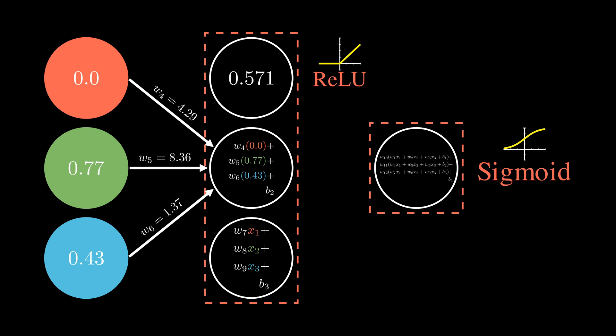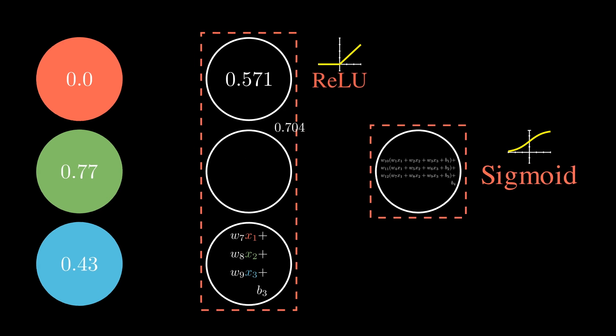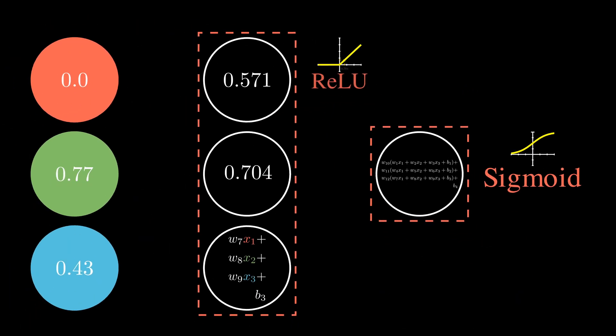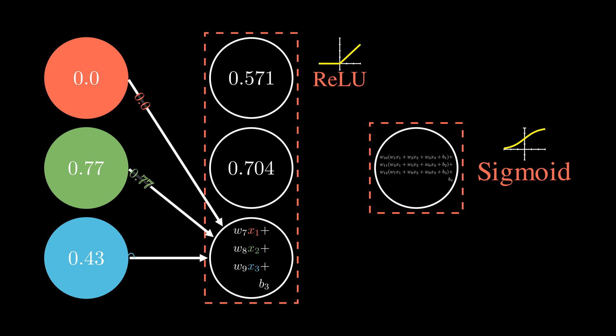We will also add that bias value, then pass it through the activation function. For this particular color, it may seem that ReLU is not doing anything because no negative values are coming out of the hidden nodes. That's okay—there are other colors that would, and outputting a negative value would result in a zero.